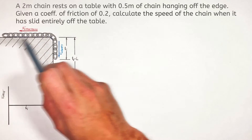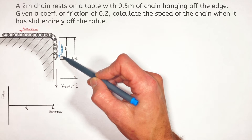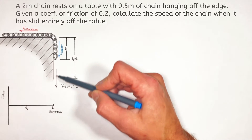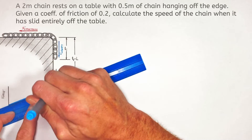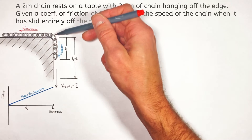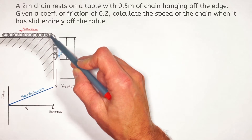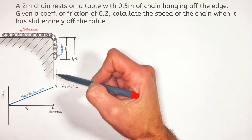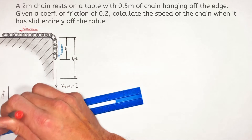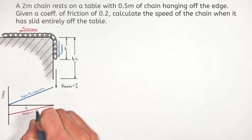If you imagine the entire chain sitting on top of the table with just one tiny little link hanging off the edge, there would be very little force by gravity. But as the chain moves farther and farther off the edge, the force of gravity pulling the chain off the table is going to increase — so the force by gravity looks like a linear increase. Taking a look at the force of friction, we see the opposite case: if there's lots of chain on the table, there's a large friction force, and as the chain is dragged off the edge, that friction force decreases.